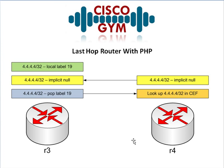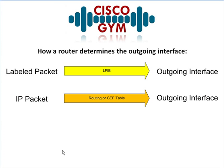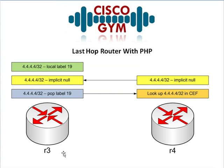Now R4 is going to get this packet and it's going to be an unlabeled packet. Going back to our slide here, we see an unlabeled packet — we're not going to go to the LFIB because it's not going to help us. There's no label, so no use searching there. Let's go to the CEF table to determine the outgoing interface. CEF says that's your loopback 0 interface and sends it out.